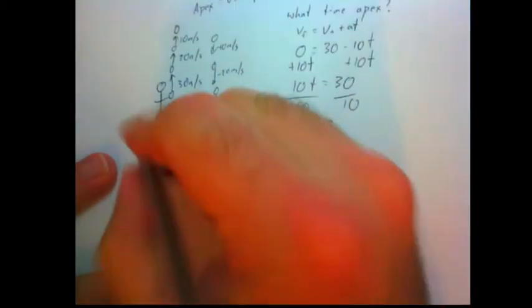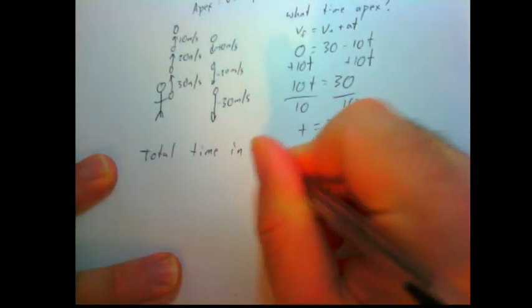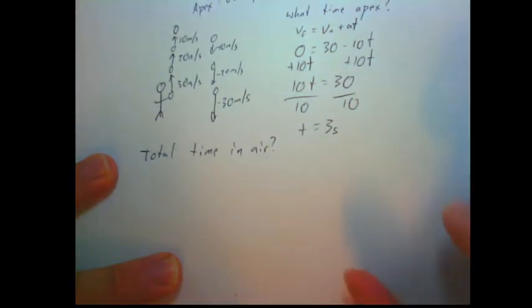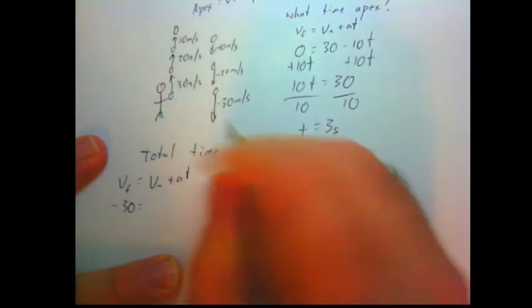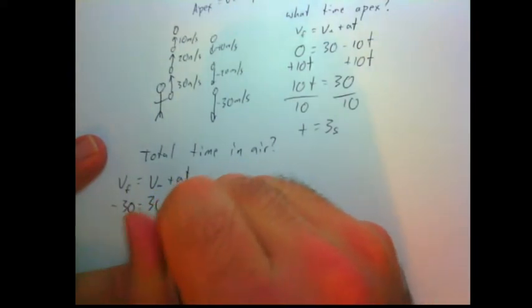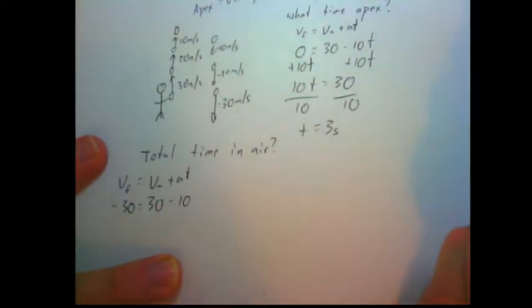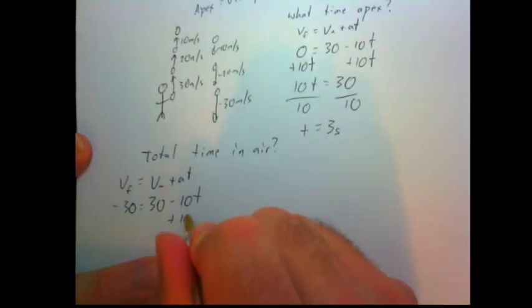Now, what if we wanted to figure out total time in the air? Well, now there are two ways we could solve this. Let's first use VF equals VI plus AT. Final velocity will be negative 30, because we know on its way down it ends up going the same speed as it did on the way up, just in the opposite direction. Again, don't fire guns directly up into the air. The initial velocity is still 30. The acceleration is negative 10, because it's in free fall, times time.